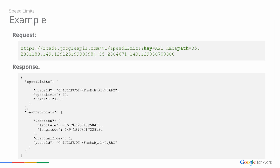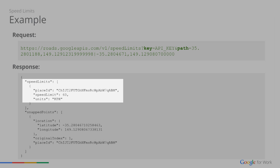Here is what a speed limits request looks like. The path describes the road segment for which you're inquiring the speed limit. As you can see in the result, we have the speed limit. Default is kilometers per hour. You can use the units parameter if you want it in miles per hour. This looks really great, Ajay. Great demo.